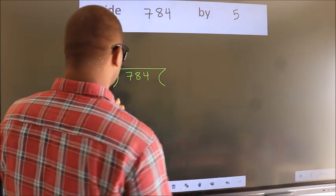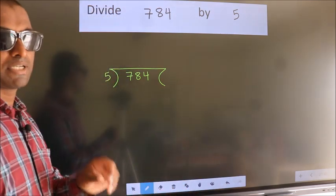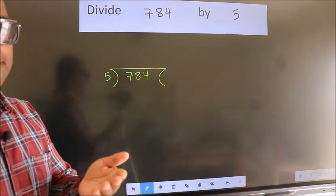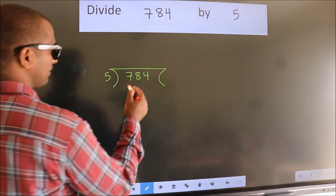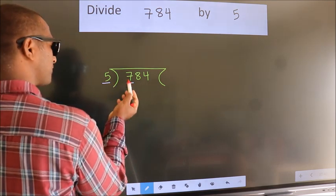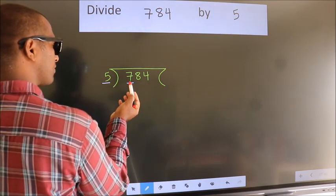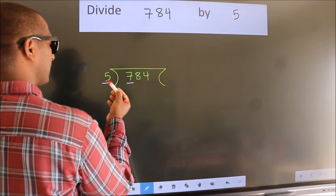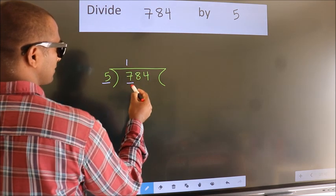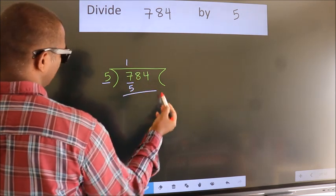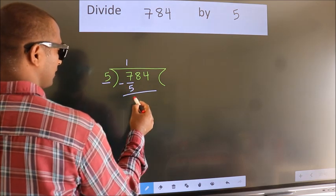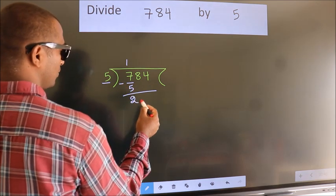This is your step 1. Next, here we have 7, here 5. A number close to 7 in the 5 times table is 5 ones, which is 5. Now we subtract. We get 2.